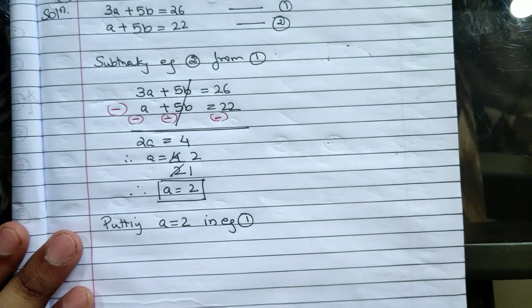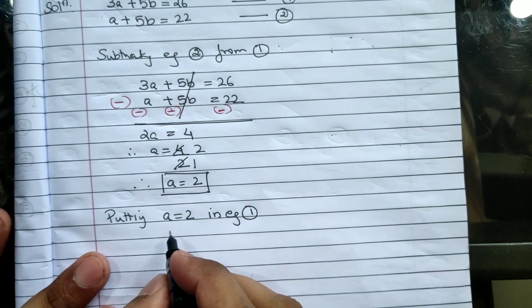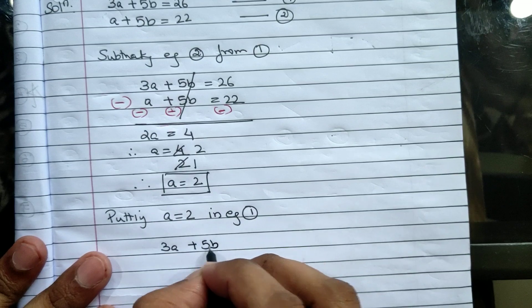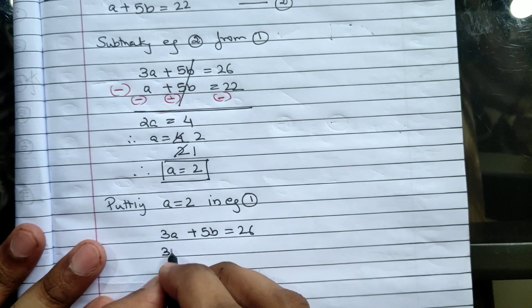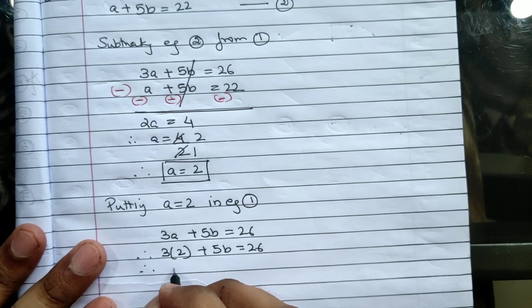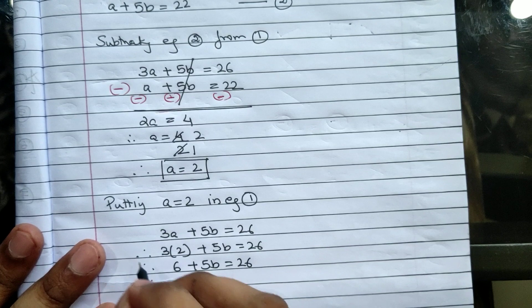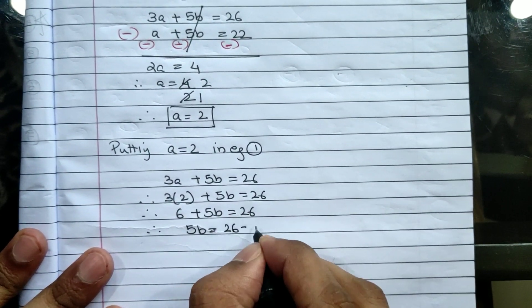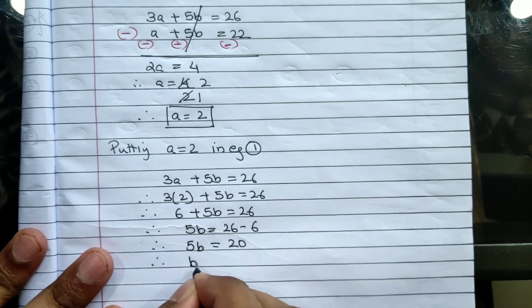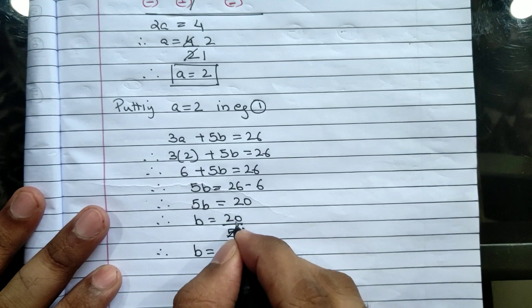So I got the value of a. Next I will write - putting a equals 2 in equation number 1. When I substitute the value of a equal to 2 in equation 1, the equation is 3a plus 5b equals 26. So 3 multiplied by 2 plus 5b equals 26. Therefore 6 plus 5b equals 26.